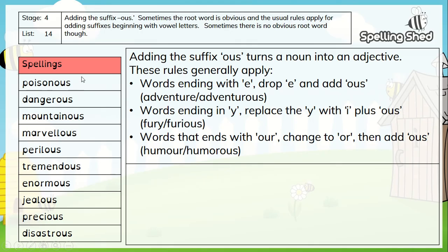So there are the spellings for this week, down the left hand side: poisonous, dangerous, mountainous, marvellous, perilous, tremendous, enormous, jealous, precious, disastrous. And I saw some wonderful sentences using those words, so well done again for that.